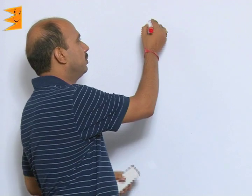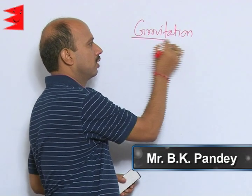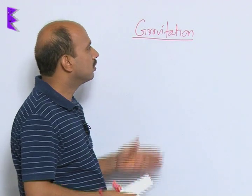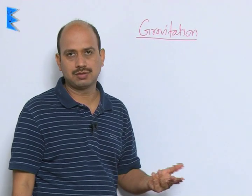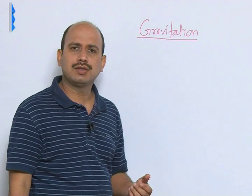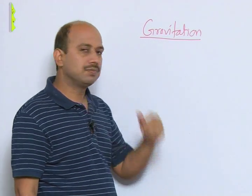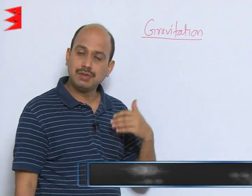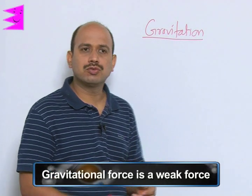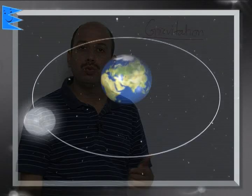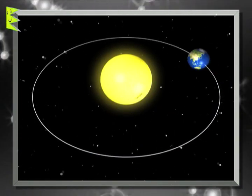Now we are going to discuss the next chapter, that is Gravitation. This chapter is very important where we will be studying about the forces acting between any two objects having masses — whether two chairs, two tables, two students, anything which has got mass. Because of gravity, whenever there are two objects, a force acts between them known as gravitational force. It is considered a weak force, but the moon revolves around the earth because of gravity, and the earth revolves around the sun because of gravitational force.